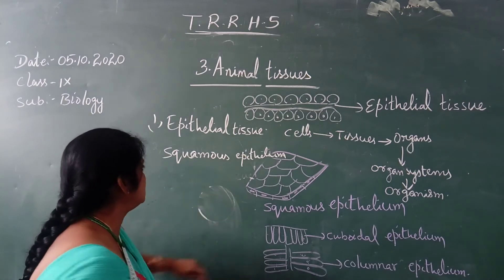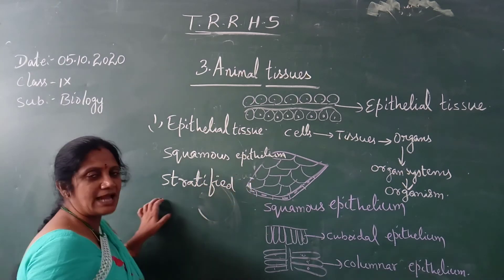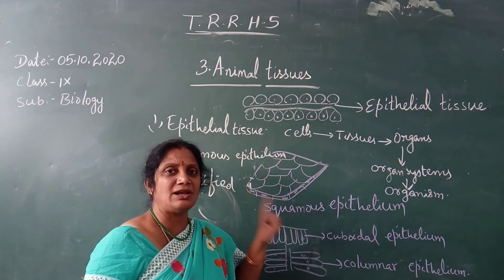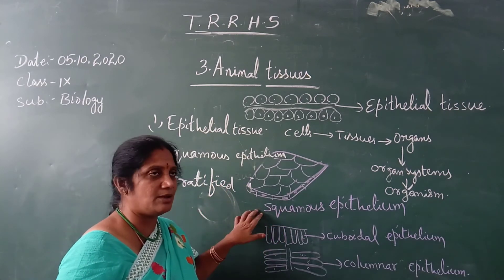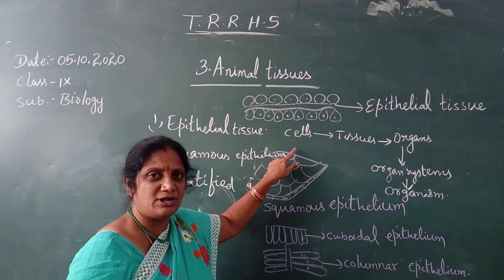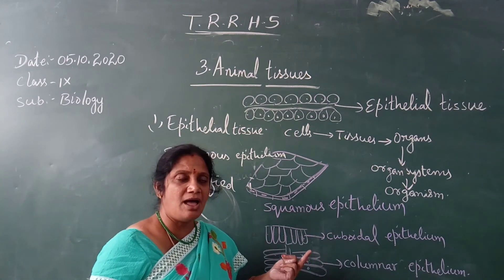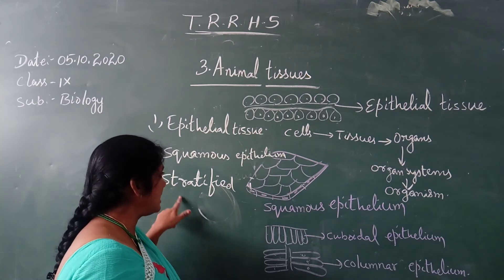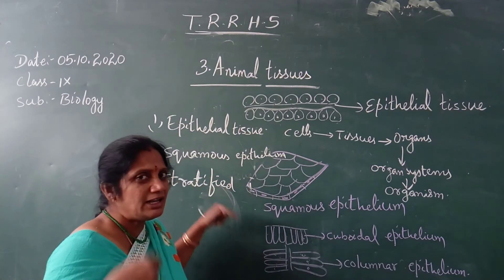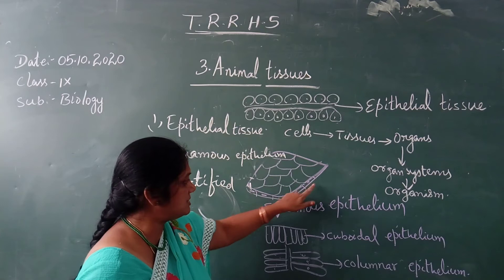The second one is called stratified epithelial. If the epithelial tissue contains more than one layer of cells, it is called stratified epithelial. So: one layer is squamous epithelial, and more than one layer is stratified epithelial.